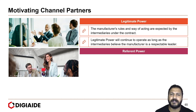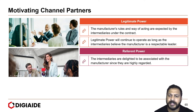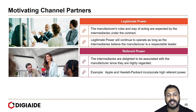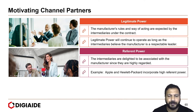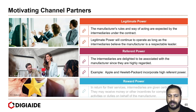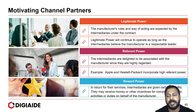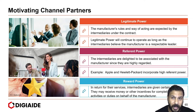Next is referent power. The intermediaries are delighted to be associated with the manufacturer since they are highly regarded. For example, Apple and HP incorporate high referent power. Next is reward power. In return for their services, intermediaries are given certain benefits. They may receive money or other incentives for completing specific activities or duties on behalf of the manufacturer.